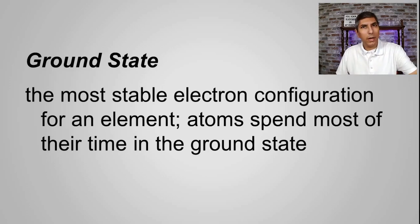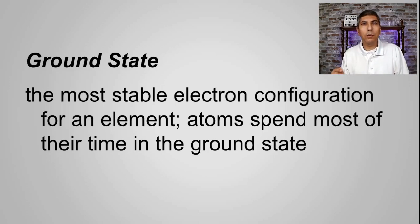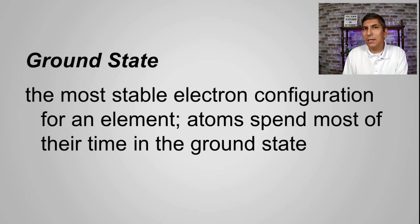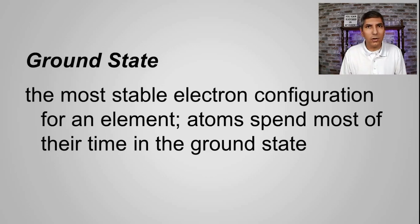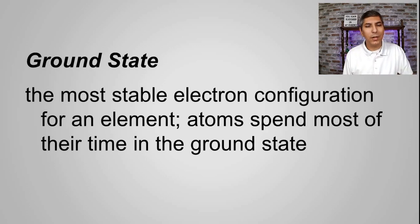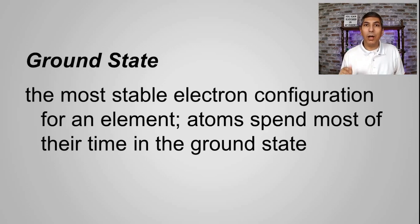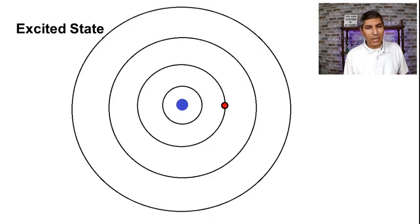When we say on a quiz or a test or a homework assignment, write the ground state electron configuration for an element, all that means is you're being asked to write just the regular electron configuration that we've learned how to do in these last several videos. That's all that means when we say ground state. Now, if there's a ground state, then there must be some other kind of state. And as it turns out, there is — the other state is called the excited state.